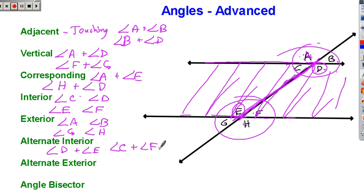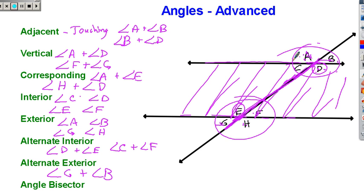Alternate exterior angles — same idea. Angle G and angle B are alternate exterior angles. They're on the exterior, outside, and they're on the opposite side of this line. G is on the left side of the line, B is on the right side of the line. H and A are also alternate exterior angles.